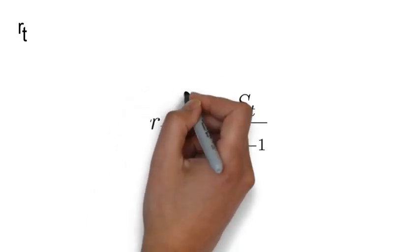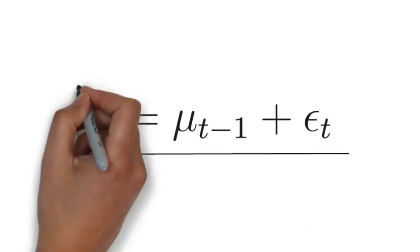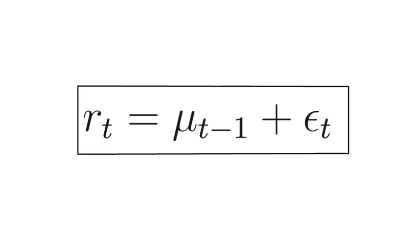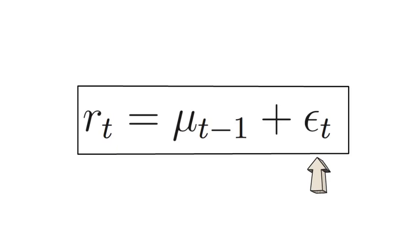Now that example teaches us that each return has a predictable and an unpredictable component. We will write that as follows, where the predictable component as of time t-1 is called mu t-1. We call the unpredictable component epsilon t.